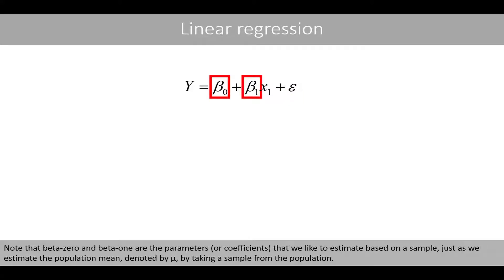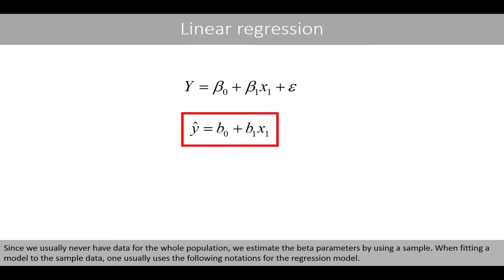Note that beta0 and beta1 are parameters or coefficients that we like to estimate based on a sample, just as we estimate the population mean denoted by mu by taking a sample from the population. Since we usually never have data for the whole population, we estimate the beta parameters by using a sample.